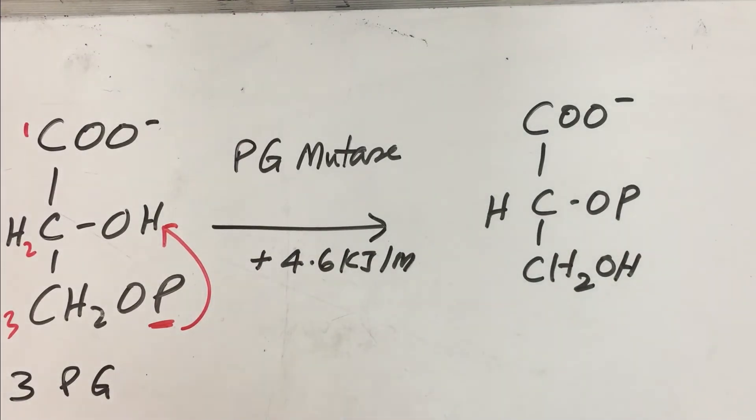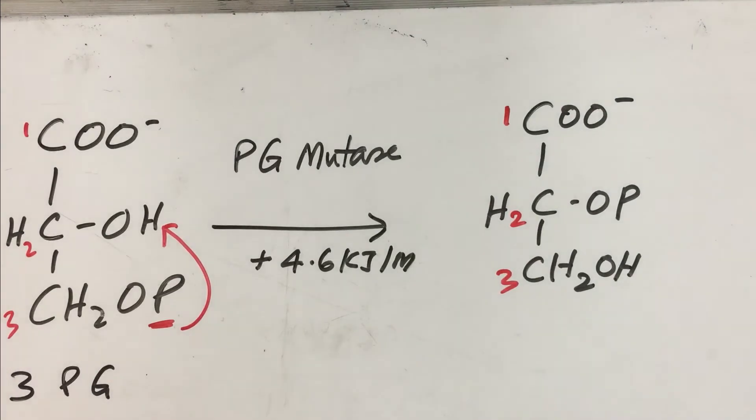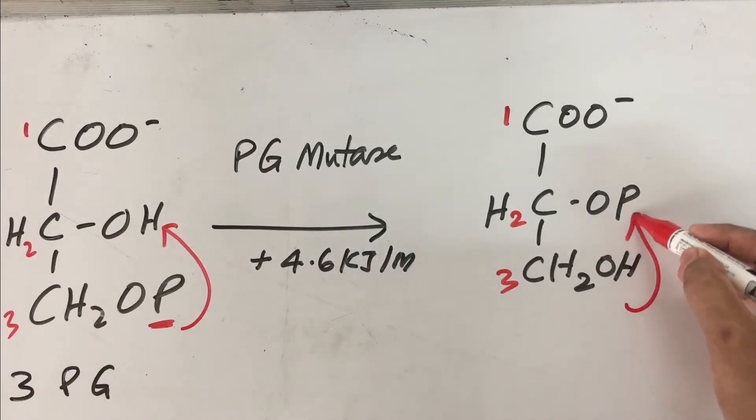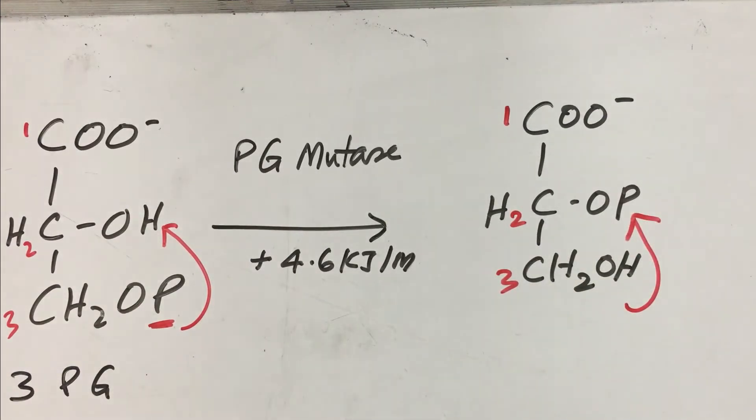You may be wondering why this shift has to occur from third position to the second position. You will understand the significance of this shifting only in the next step. By shifting, this substrate or intermediate is increasing the potential for energy transfer, because we want to harvest more ATP molecules. It is increasing the potential for energy transfer by this internal rearrangement. This is reaction number 8 catalyzed by the mutase enzyme.